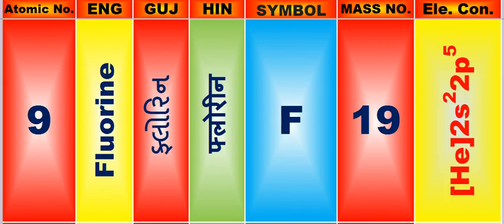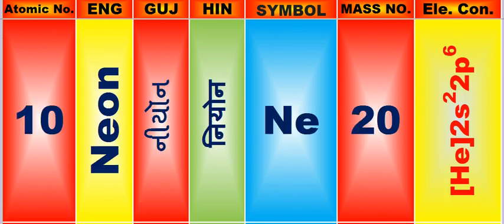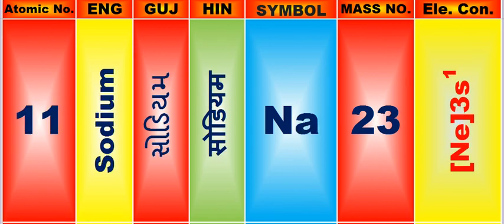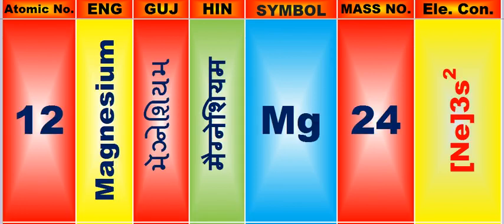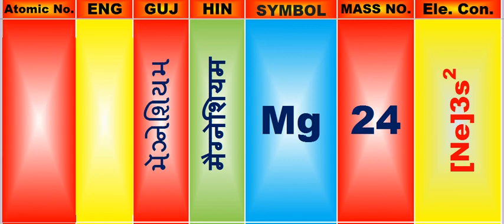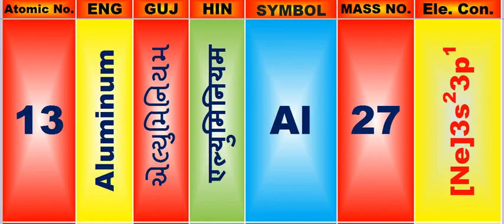Atomic number is 9, name of atom is Fluorine. Atomic number is 10, name of atom is Neon. Atomic number is 11, name of atom is Sodium. Atomic number is 12, name of atom is Magnesium. Atomic number is 13, name of atom is Aluminum.